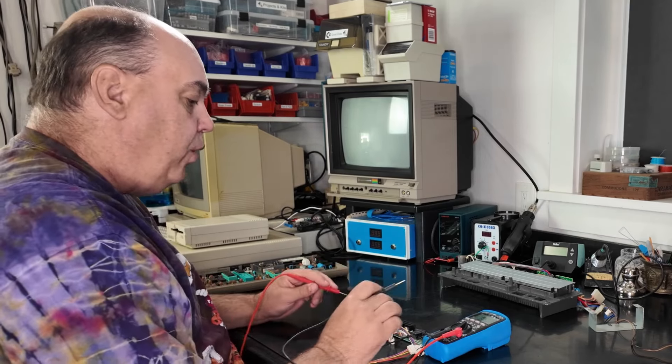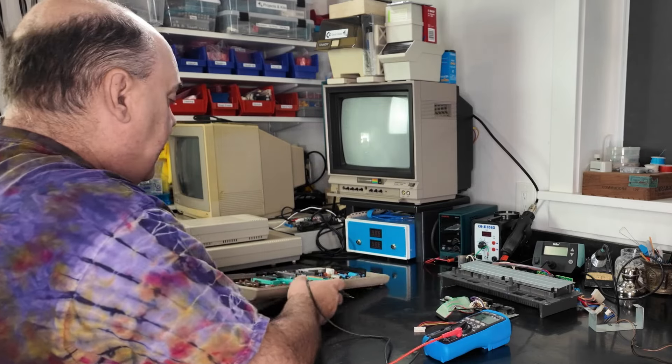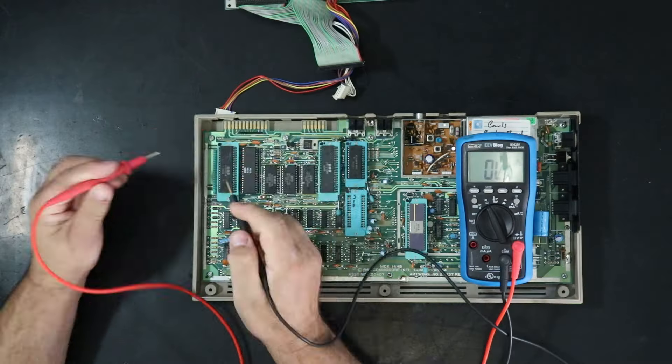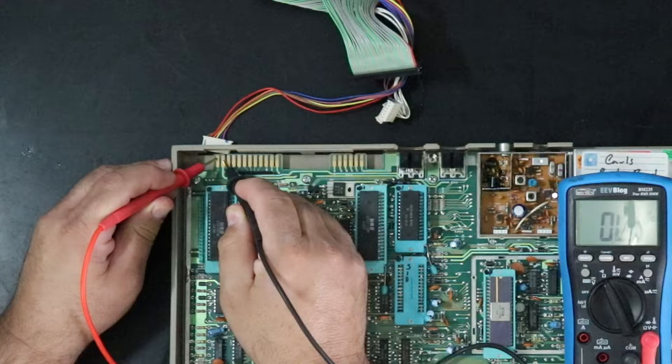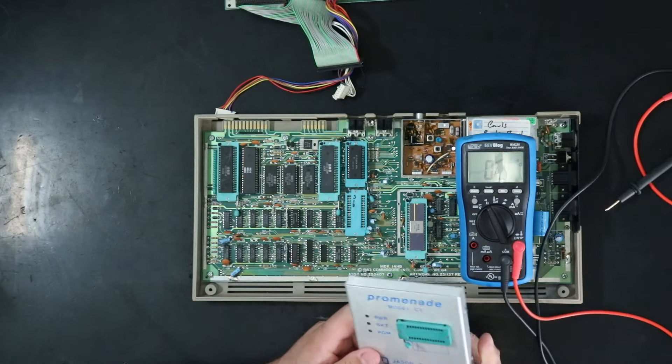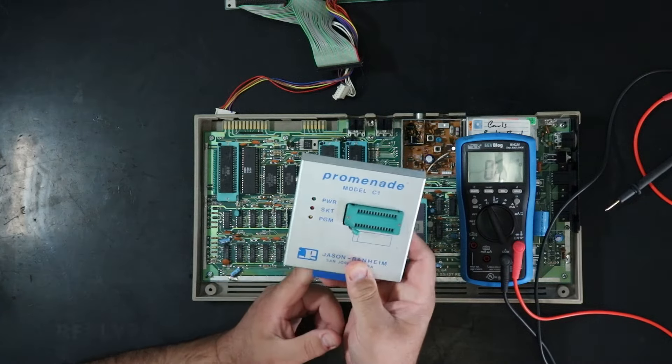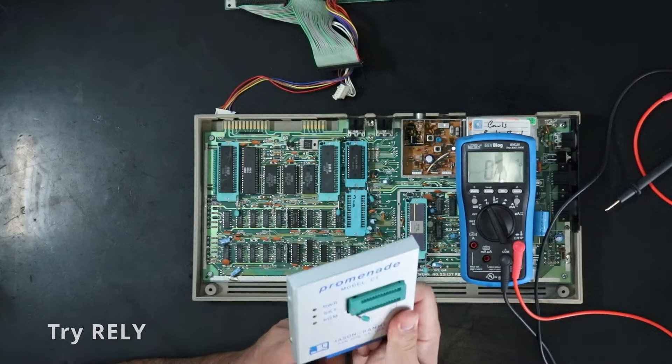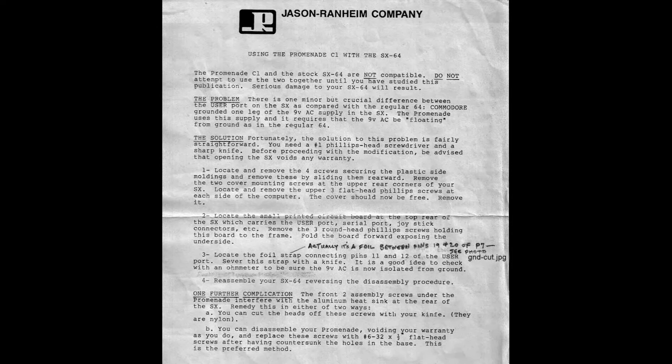So some devices like my Promenade C1 EPROM burner rely on this power supply and using them on an unmodified SX-64 is likely to cause serious damage to the machine per this letter from the Promenade's manufacturer which I found on Ray Carlson's website. No seriously if you don't know about Ray Carlson's website I'll put a link below.